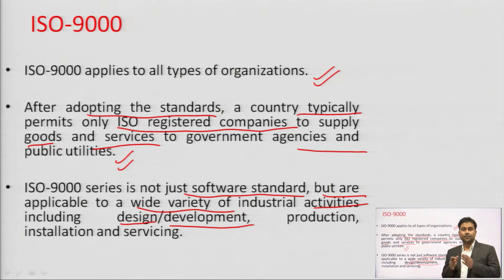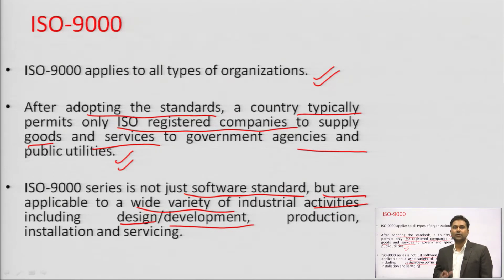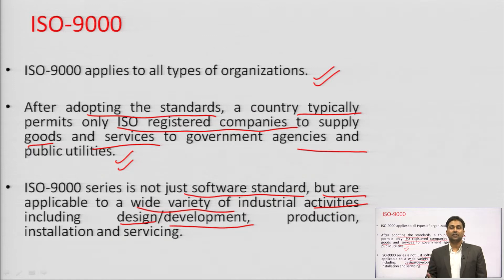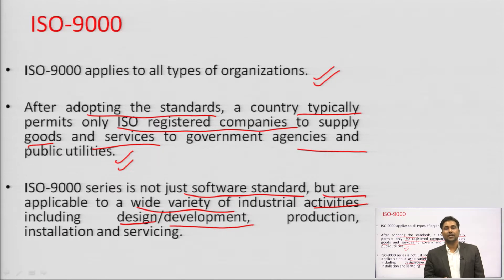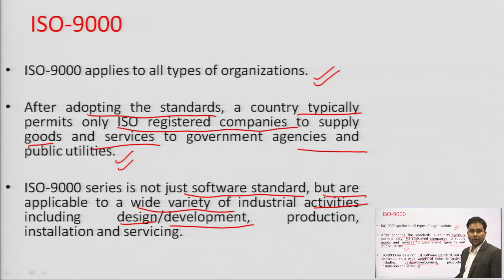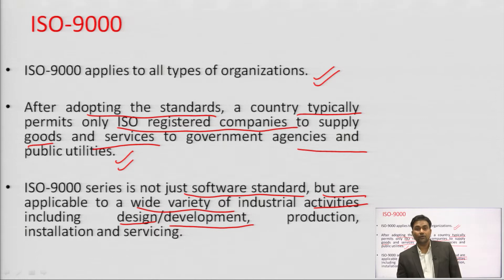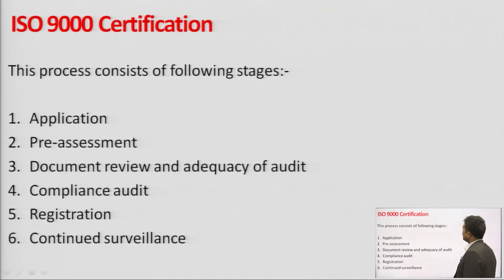ISO 9000 series is not only responsible for software development quality — it covers design, development, production, installation, and services. If a company dealing in food products, automobile products, televisions, hair dryers, or mobiles is listed with ISO, it must follow all rules, regulations, processes, parameters, documentation, and procedures accordingly. Based on that, they get authorization.